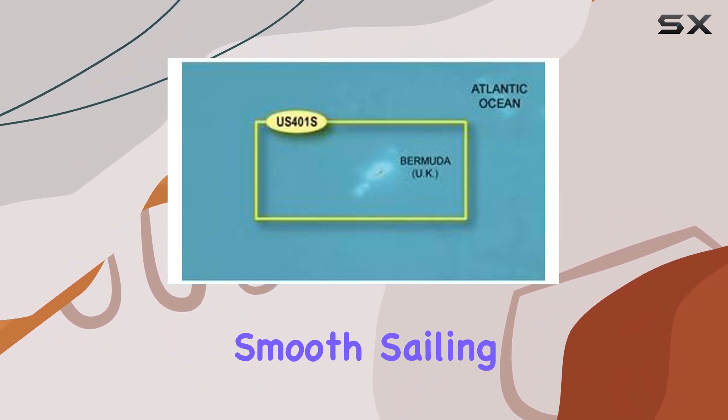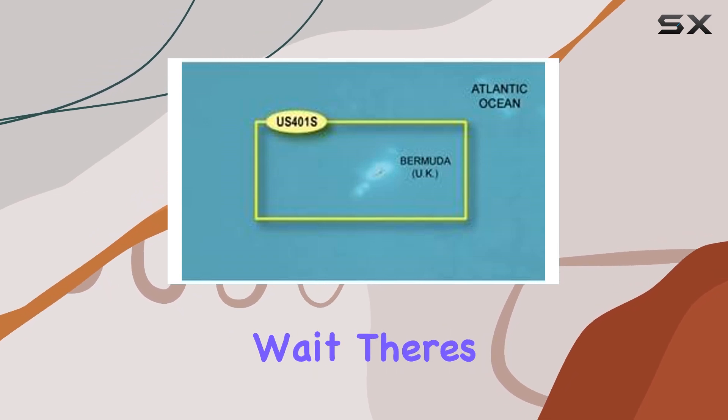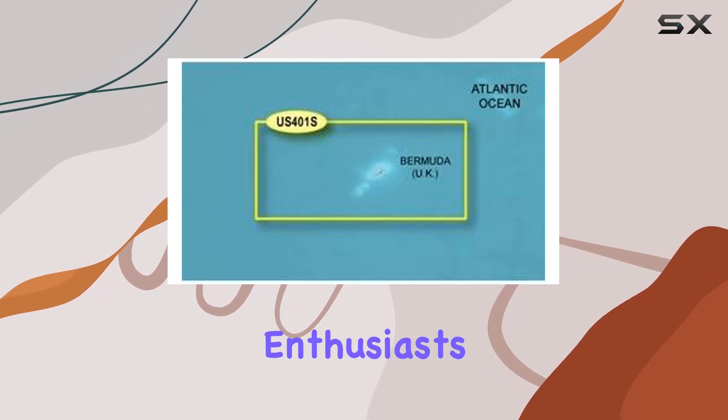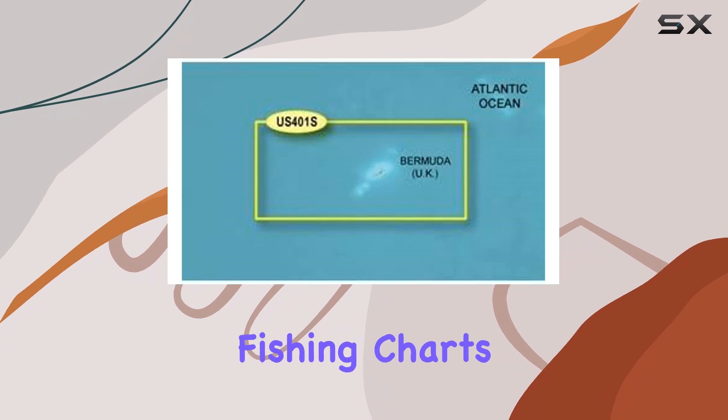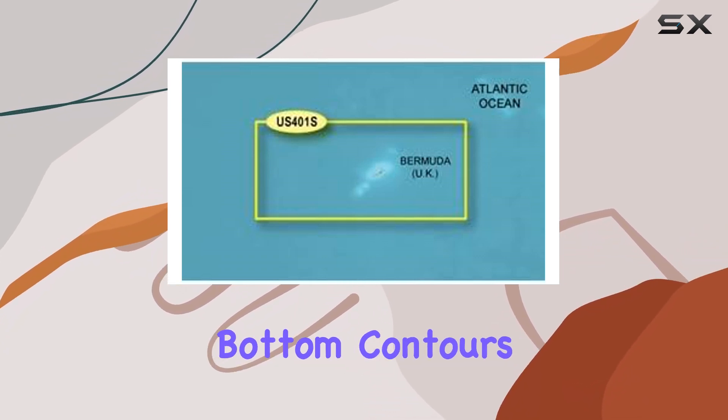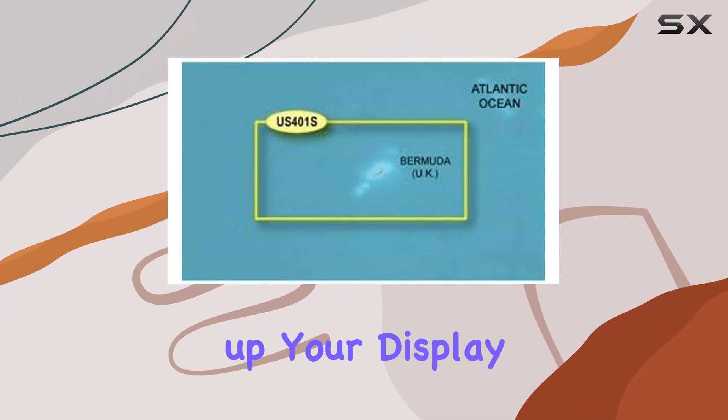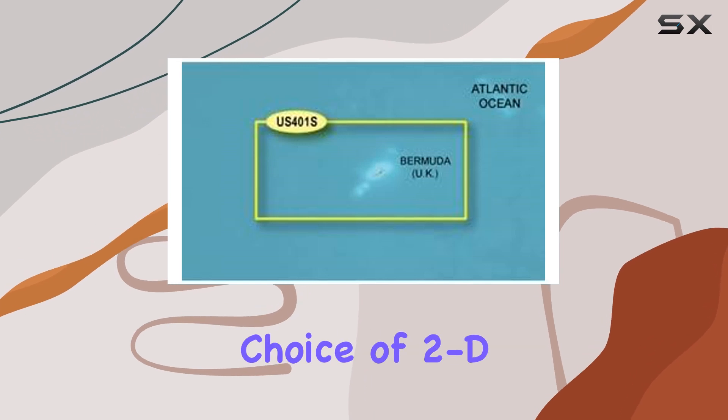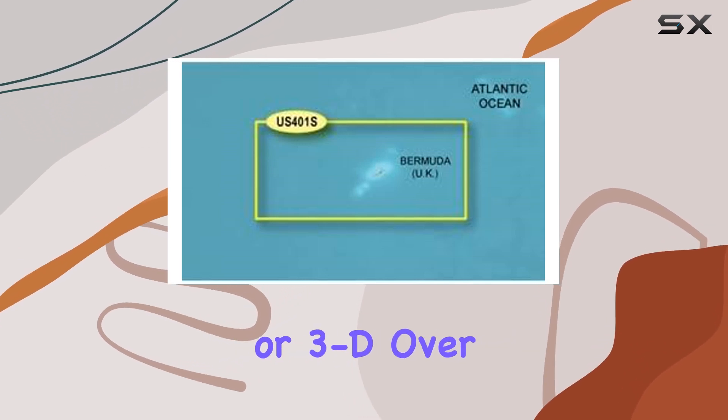But wait, there's more! Fishing enthusiasts, rejoice. The fishing charts provide detailed bottom contours and depth soundings without cluttering up your display. Plus, with the choice of 2D direct overhead or 3D over the bow perspectives, chart reading becomes a breeze.